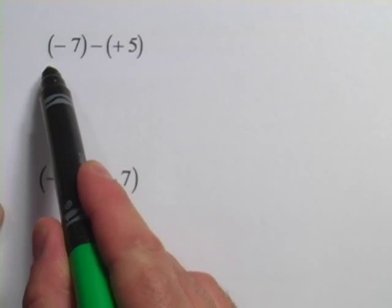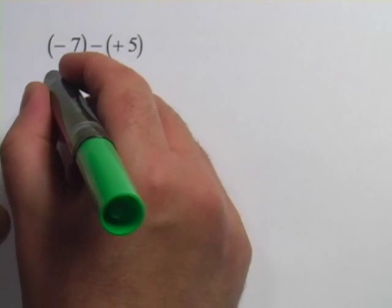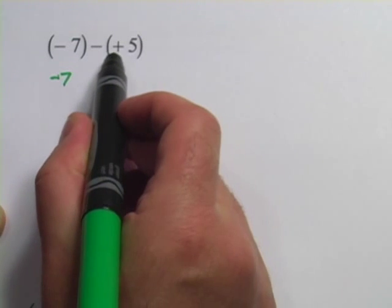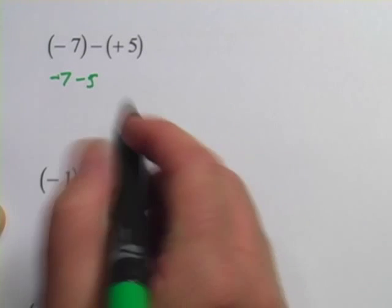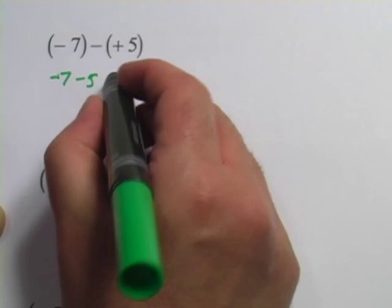So if we start this one from the beginning, we start with a minus 7 and then we do the opposite of adding 5 which is subtracting 5, and a negative 7 minus 5 is negative 12.